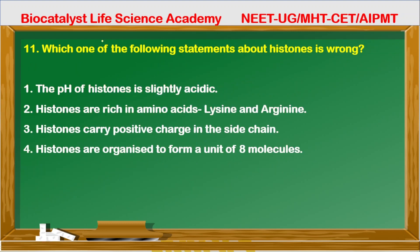Question 11: Which one of the following statements about histones is wrong? Option one — the pH of histones is slightly acidic — this is incorrect because histones are basic, not acidic. Histones are rich in basic amino acids lysine, arginine, and histidine — correct. Histones carry positive charge in the side chain — correct. Histones are organized to form a unit of eight molecules called an octamer — correct. So the wrong statement is option number one.